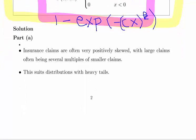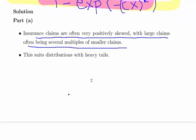So the first question is just actually why we would use distributions like this, like the Weibull distribution. Essentially insurance claims are often very positively skewed with large claims, often several multiples of smaller claims. So essentially long tail distributions like that.